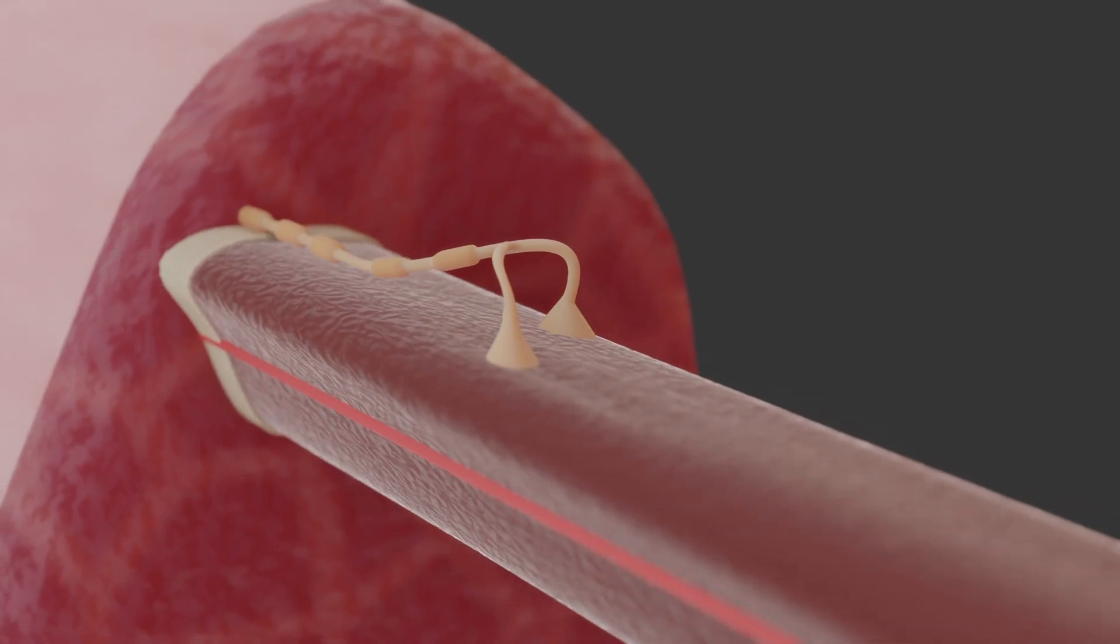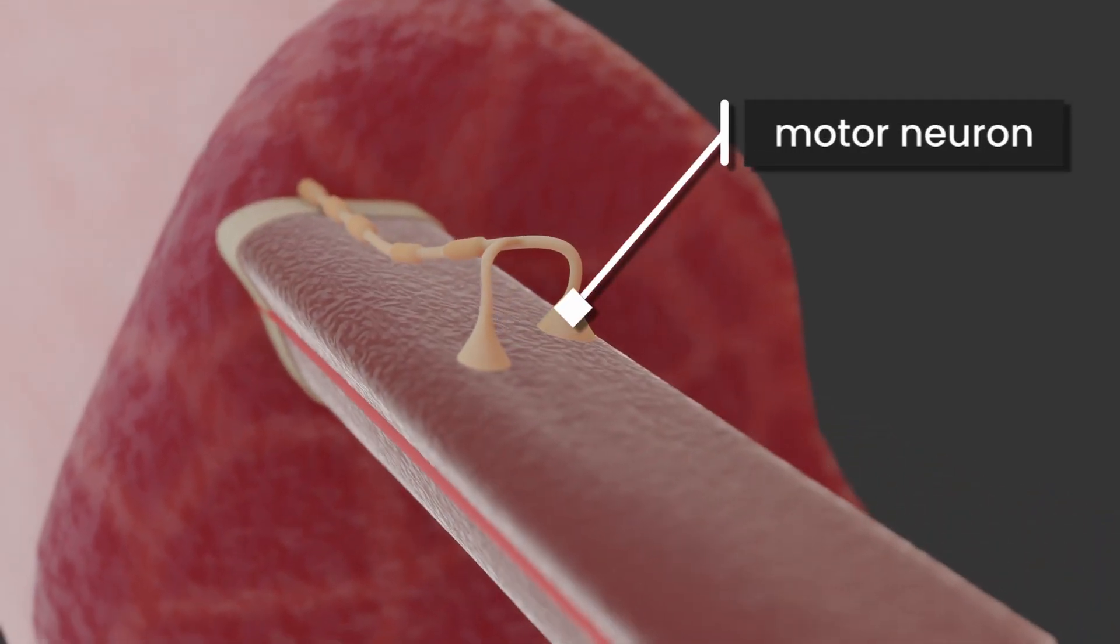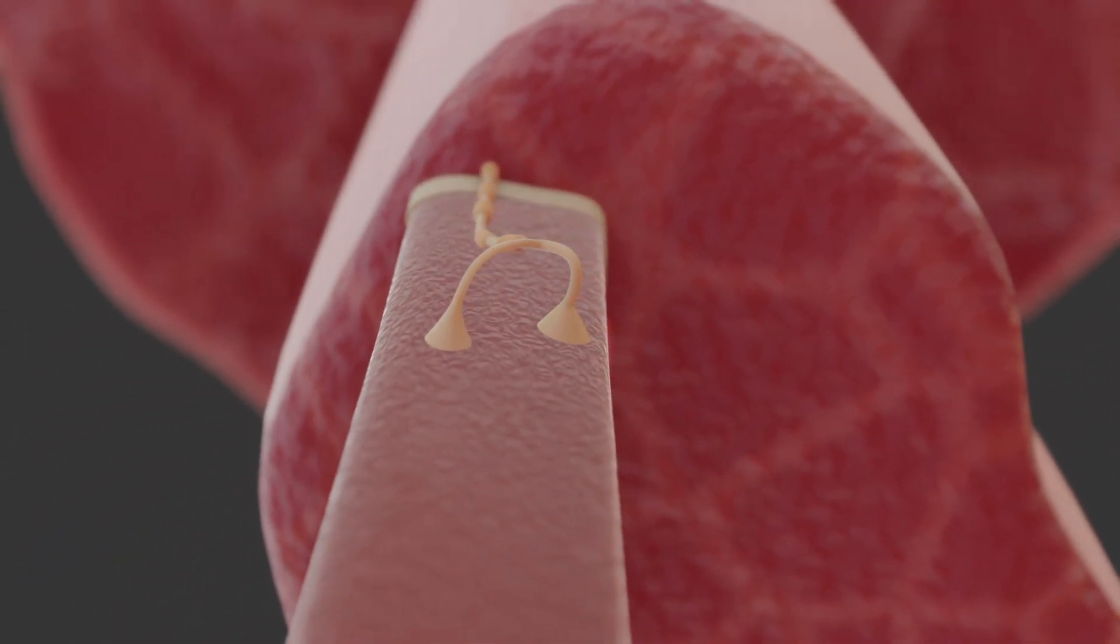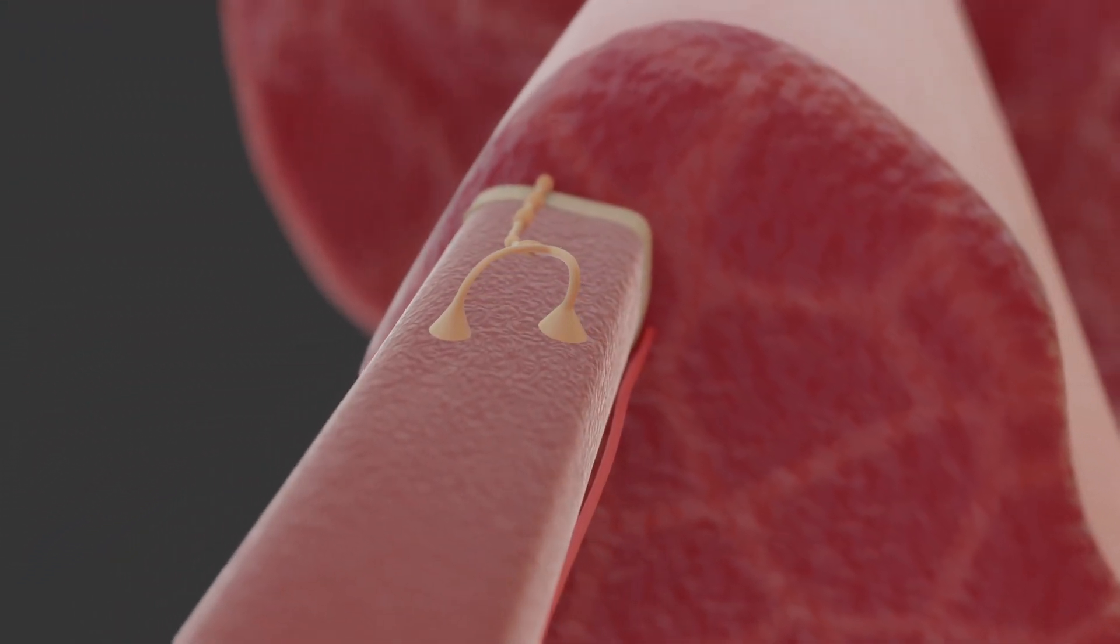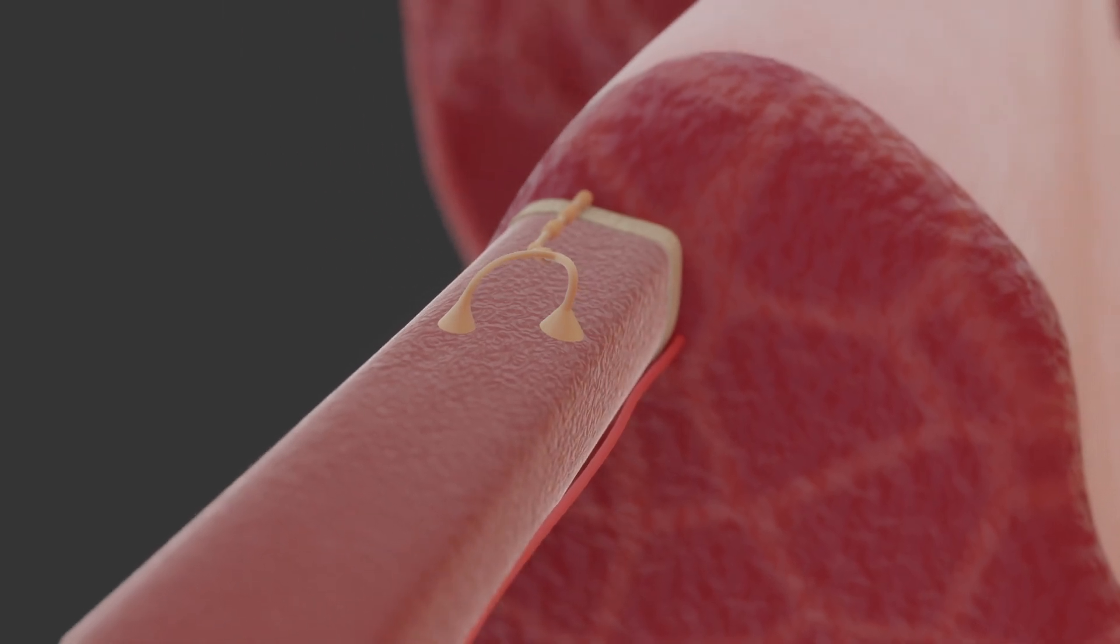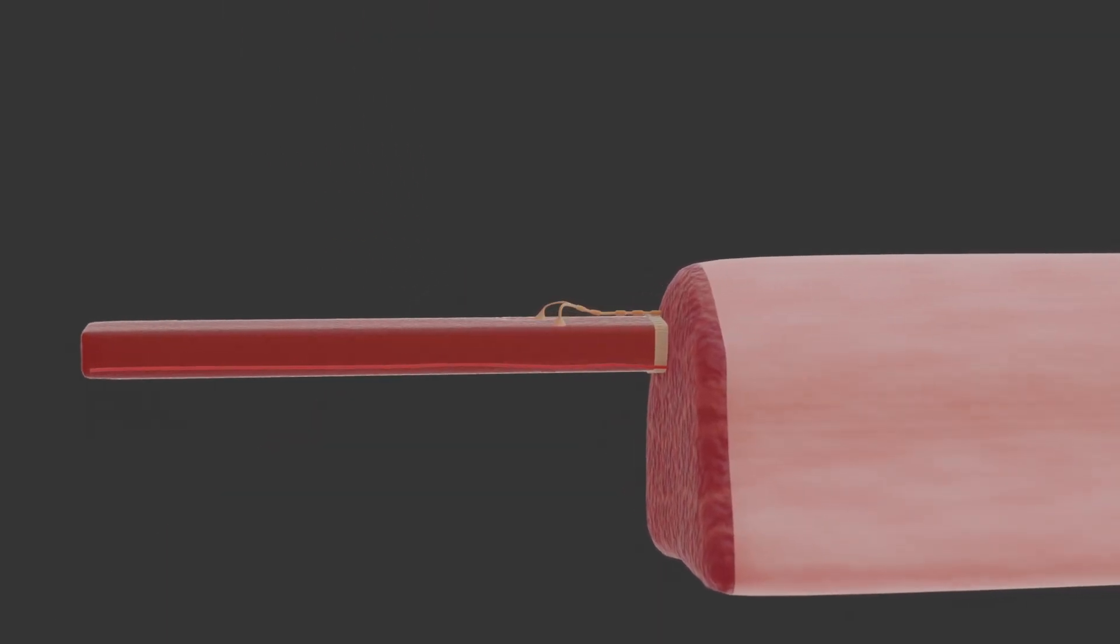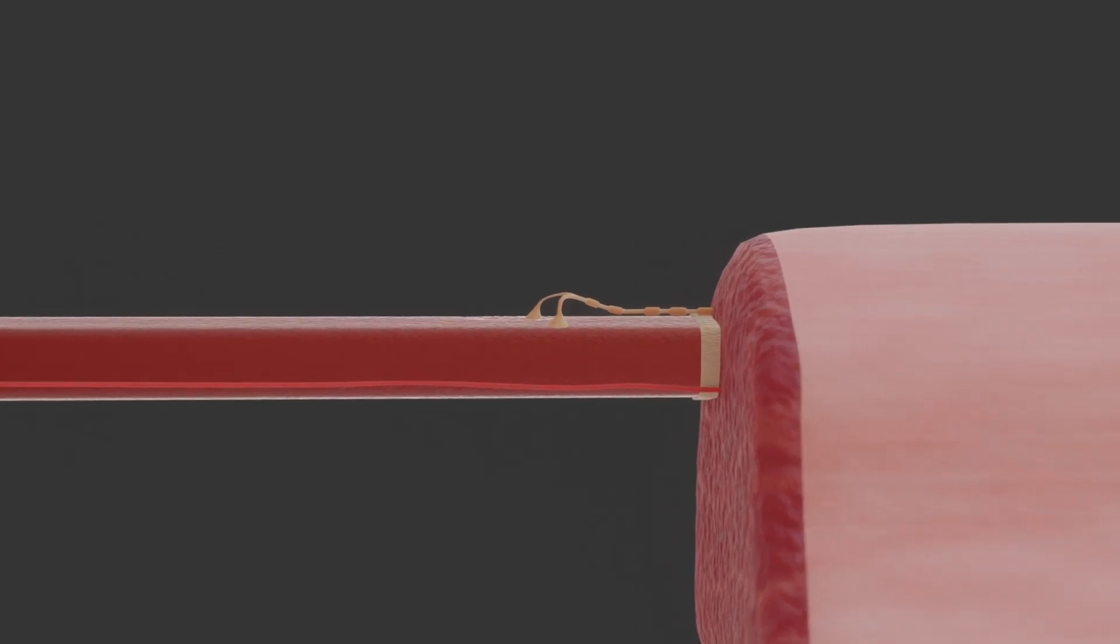The nerve cells responsible for activating the muscle fibers are called motor neurons. A distinction is made between upper and lower motor neurons. The lower motor neurons are in direct contact with the muscle cells. The connection points are referred to as motor end plates.